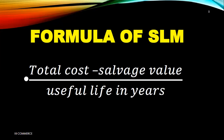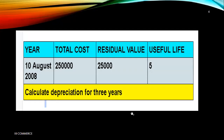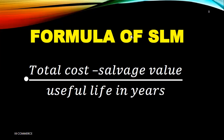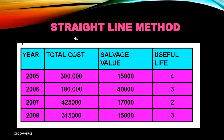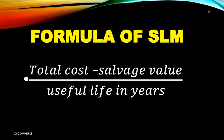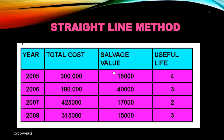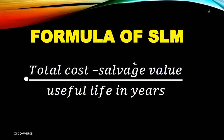We put the values into the formula and find the answers using the straight line method. For 2005: 300,000 minus 15,000 equals 285,000. We then divide 285,000 by 4 to get our answer. Let's proceed to the next question for the next year.